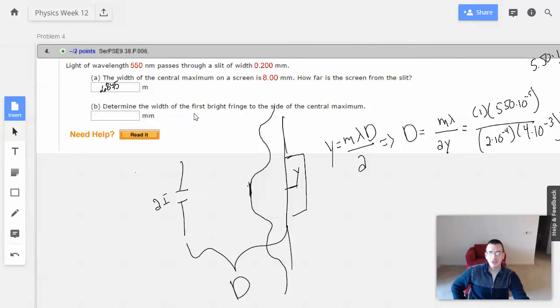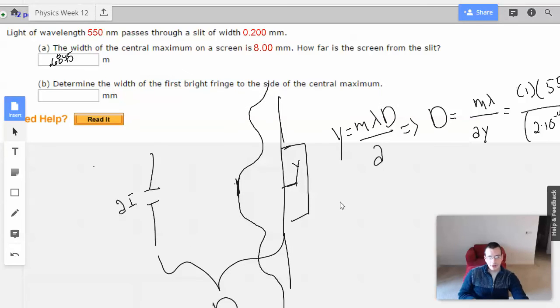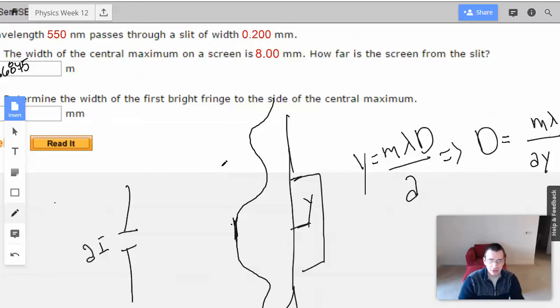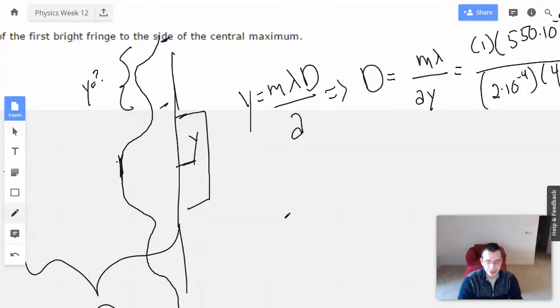Alright, determine the width of the first bright fringe on the side of the central maximum. So we're trying to find the width of this guy right here. This width, Y mystery. So the way we're going to do this is I'm going to find the position of the second dark spot, I'm going to subtract the position of the first. So I'm going to find y2, which is up here, I'm going to subtract from it y1, and that will give me this distance right here.